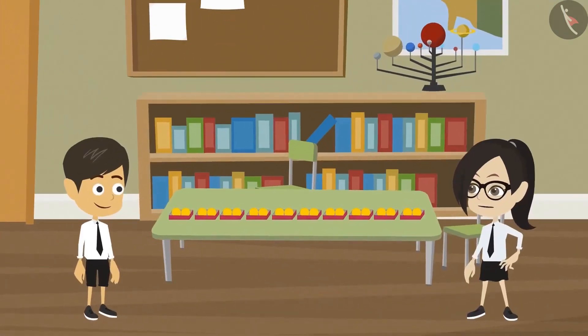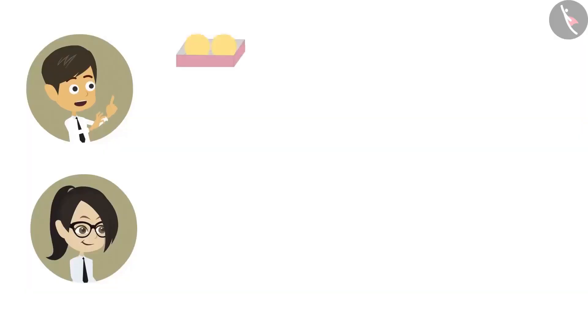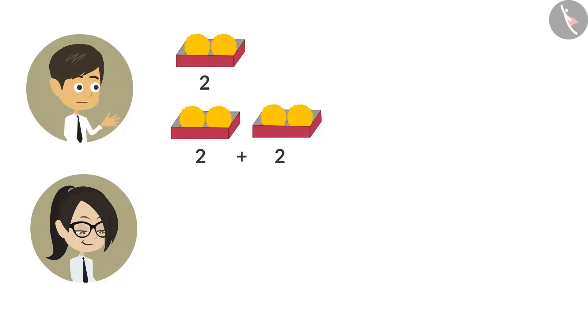Now look, there are 10 boxes. Each box has 2 ladoos. So let's count the ladoos in the boxes. Okay, each box has 2 ladoos. To know the ladoos in 2 boxes, we have to add 2, 2 times. So the answer is 4. Which means there are 4 ladoos in 2 boxes.